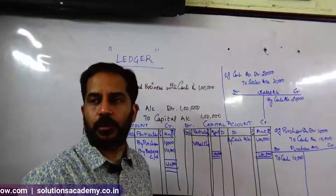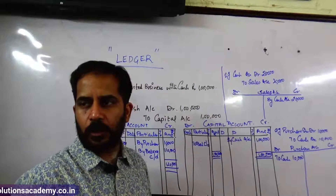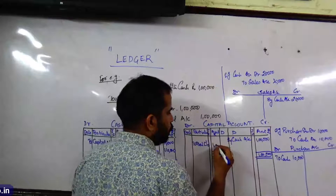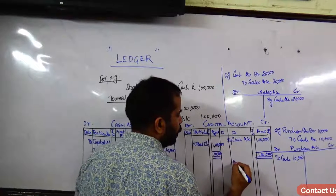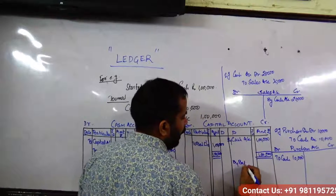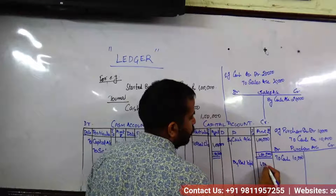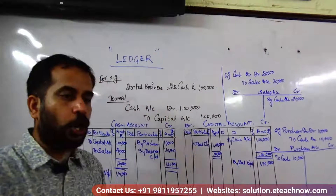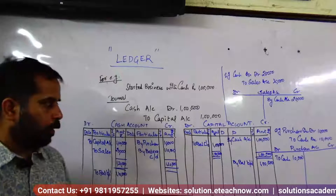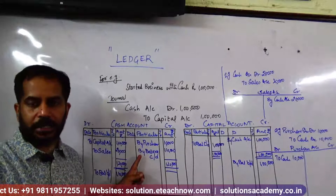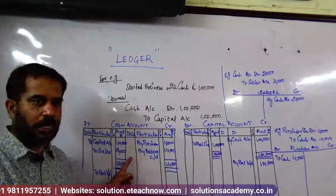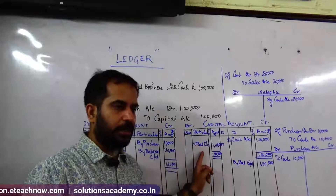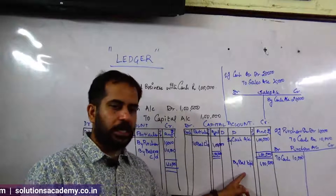To close the account, write C/D — Carry it Down — on the larger side. When you open it again, you write B/D — Balance Brought Down — on the opposite side. Whichever side you close the account on, you open it on the opposite side. If you closed on the credit side, you open on the debit side.